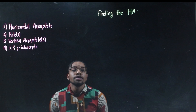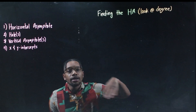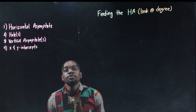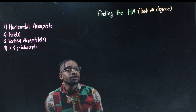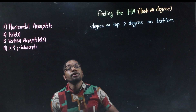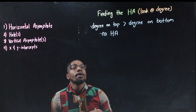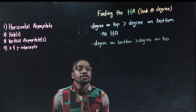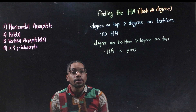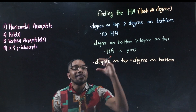The first thing you want to find is your horizontal asymptote. Look at the degree in your numerator and denominator — the degree is just the highest exponent. There are three situations: if the degree on top is bigger than the degree on bottom, there is no horizontal asymptote. If the degree on bottom is bigger, the horizontal asymptote is y equals zero. If the degrees are equal, divide the leading coefficient on top by the leading coefficient on bottom.